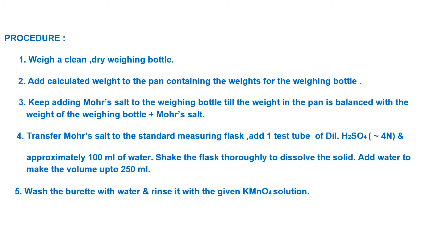In the procedure, we need a weighing bottle — a small bottle with a particular weight. Take a clean, dry weighing bottle and add the calculated weight to the pan. In this case, 4.9 grams is the calculated weight for the weighing bottle. Keep adding more salt to the weighing bottle until the weight in the pan is balanced with the weight of the weighing bottle plus the salt. For example, if the weighing bottle weighs 16 or 17 grams, you add 4.9 grams more using the weight box and fractional weights. This weighing procedure is best understood in the lab.